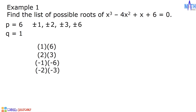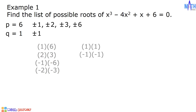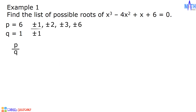Next, let us find factors of q. Since 1 equals 1 times 1 and negative 1 times negative 1, then we have positive and negative 1. Next, let us divide the factors of p by the factors of q, since p over q is the list of possible roots.